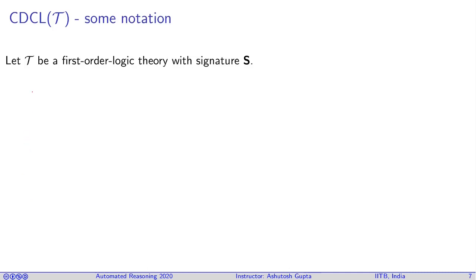Let's get some notation. Let theory T be a first-order logic theory with signature S. We assume input formulas are from theory T, quantifier-free and in CNF. We always assume our inputs are in CNF.